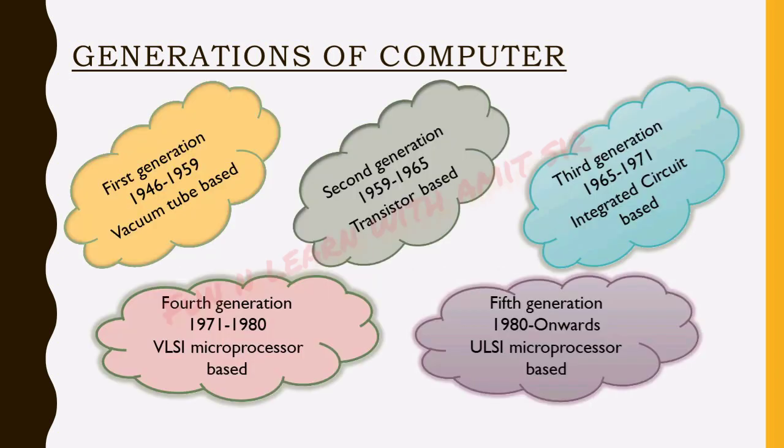As per the technology till date, computers are divided into five different generations. The first generation computers were mainly developed between 1946 and 1959 and used vacuum tube-based technology. Then came transistor-based technology, called the second generation, covering computers developed between 1959 and 1965. Then the technology changed and ICs — Integrated Circuits — were introduced, marking the third generation, from 1965 to 1971.